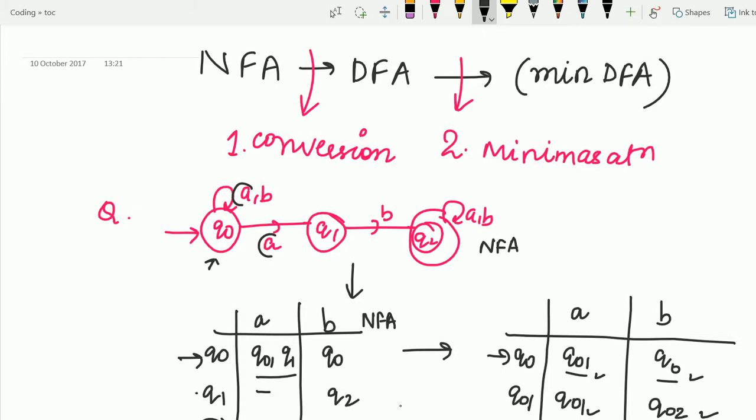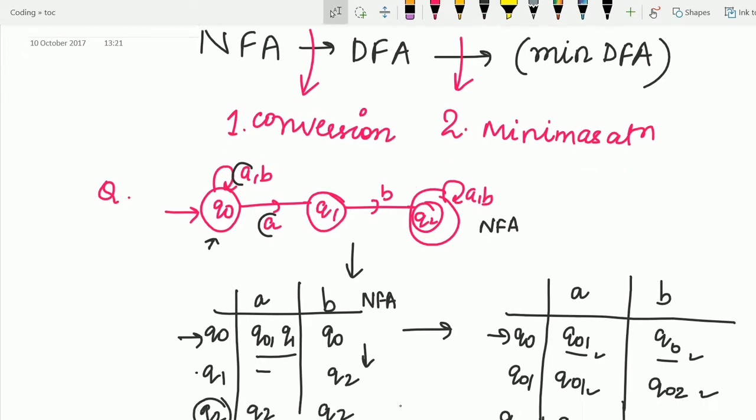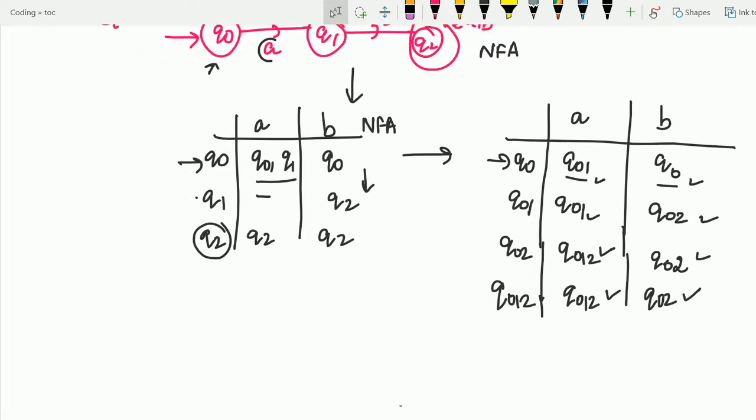Now, as we have made entry for Q02, it's the time to make entry for Q012, 012. So Q012 is Q012 itself, combining all these three entries. And here, combining these three entries, we are getting Q02. As the entries for all the reachable states are made, our table is filled completely. So we are done with this.